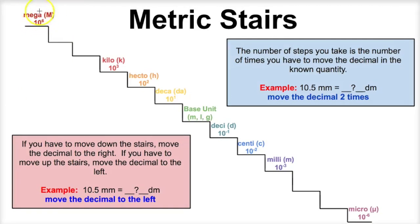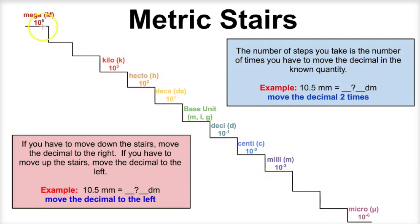We learned, for example, that mega means a million or 10 to the sixth. Kilo means a thousand or 10 to the third. Hecto means a hundred or 10 to the second, and so on. And so what we can do is we can take these metric unit prefixes or SI unit prefixes and put them on some metric stairs.